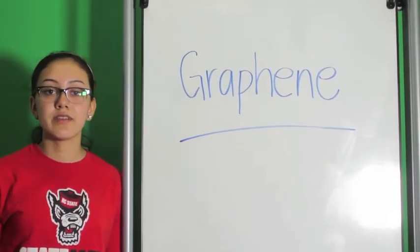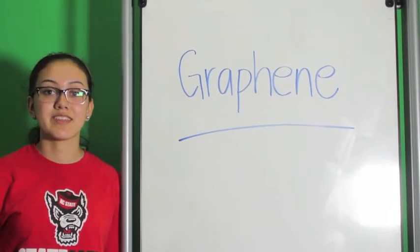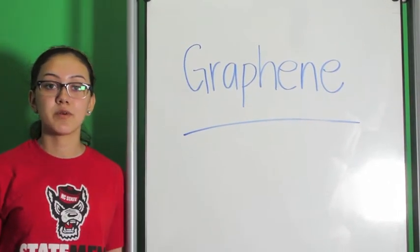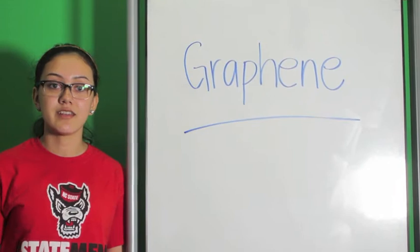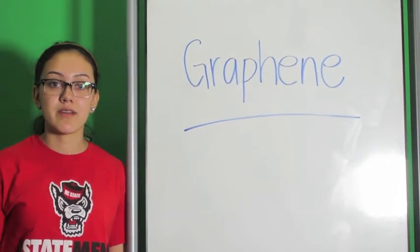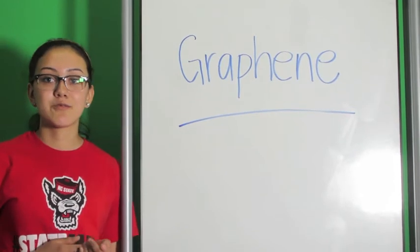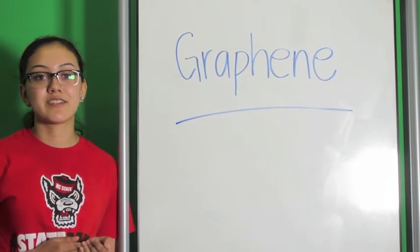Graphene is a thin flake of ordinary carbon, literally one atom thick. Two scientists from the University of Manchester won the Nobel Prize in 2010 for extracting a piece of graphite and making the thinnest and strongest material ever that even an elephant can stand on it.